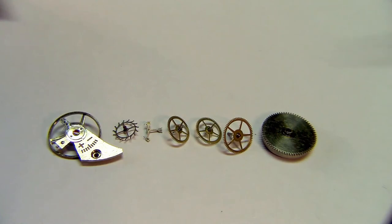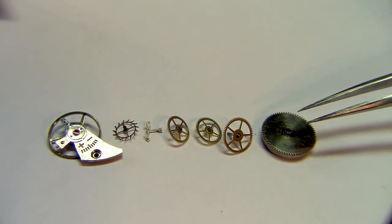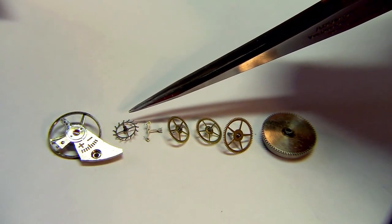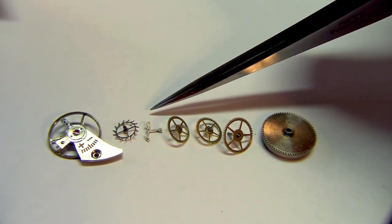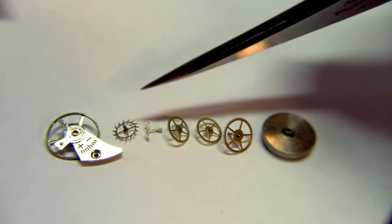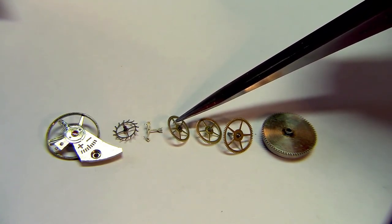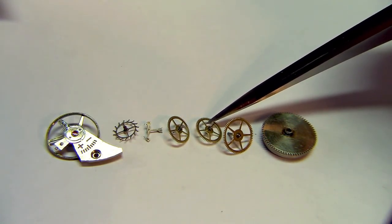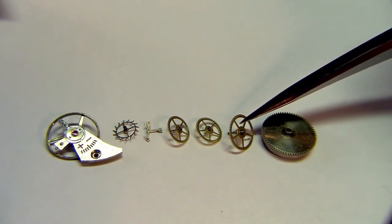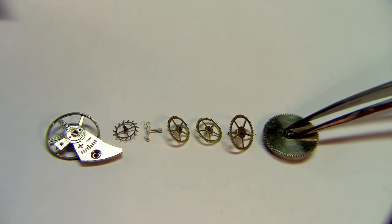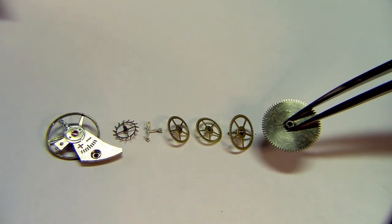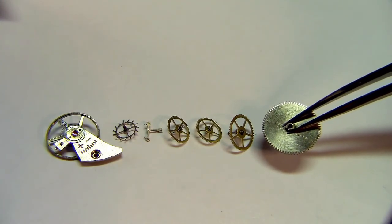These are the parts that are involved: energy source and the regulating organ going through the escapement, the escapement wheel, the pallet fork which makes the tick-tock, the fourth wheel that makes one turn per minute, the third wheel that's just an intermediate wheel between the fourth and the center wheel, and the mainspring barrel.